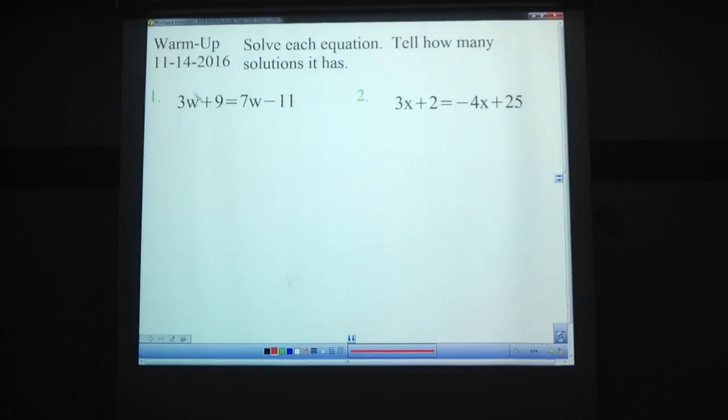So I'll have each equation and tell how many solutions I have. Problem number one, 3w plus 9 equals 7w minus 11. Pause the video, try these out. And we're back.